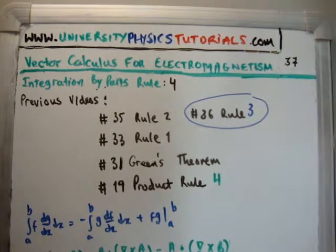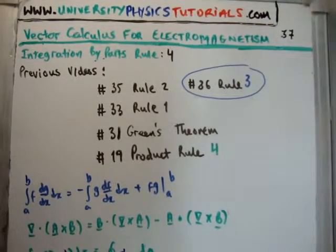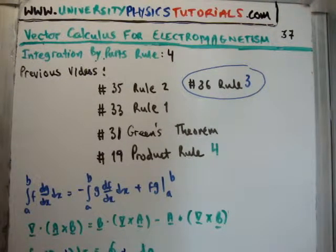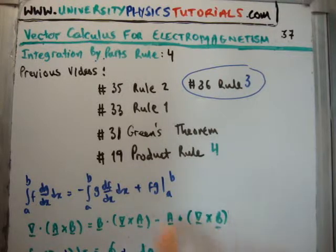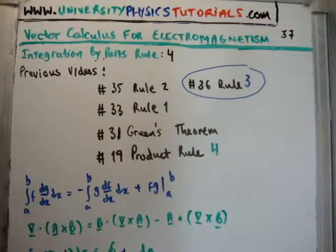Product rule number 4 is here. Okay? So product rule 4 is where we take the divergence of a cross product between vectors a and b and it gives us this which I don't need to go into. So the usual technique is to integrate this over a particular either area or volume and apply either Stokes or Green's theorem.